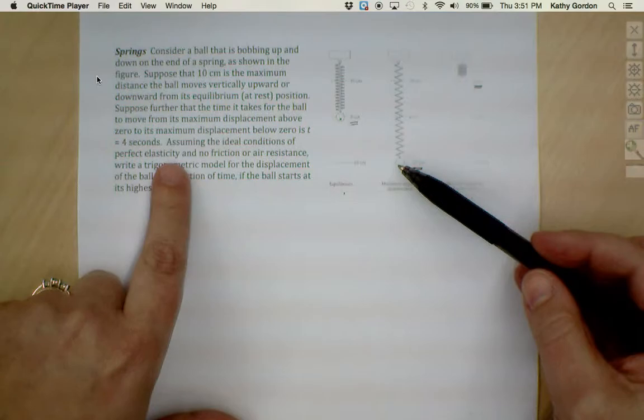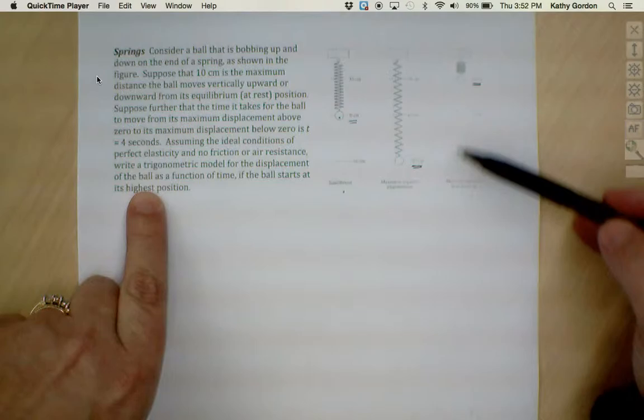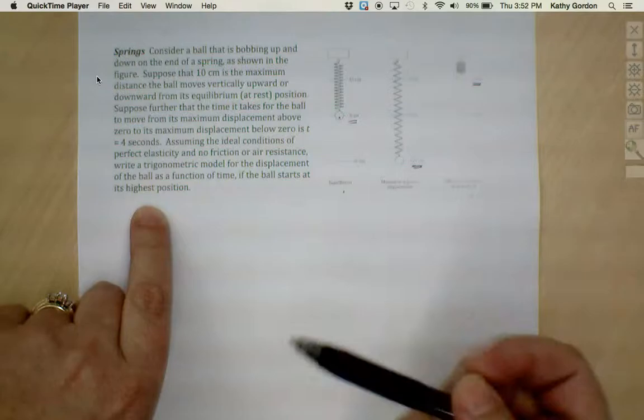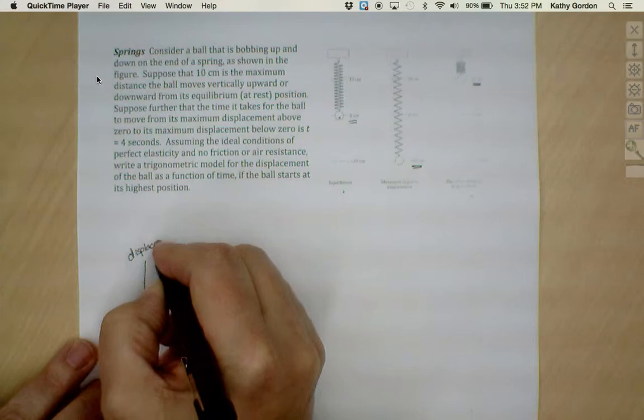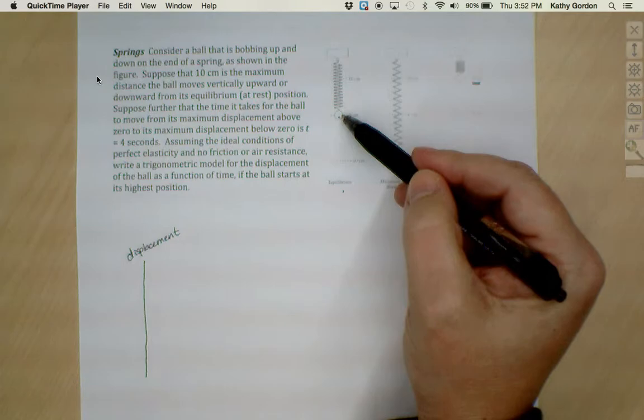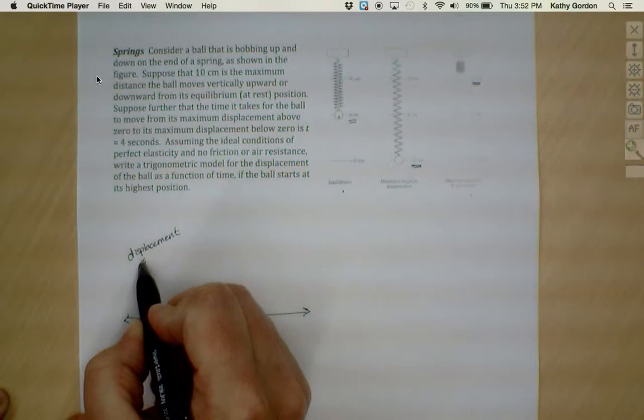It says to suppose further that the time it takes for the ball to move from its maximum displacement above zero, to its maximum displacement below zero, down to here, is t equals four seconds. So it takes four seconds for it to bounce from here, down to here, back again, to get from its max to its min. Assuming the ideal conditions of perfect elasticity and no friction or air resistance, write a trigonometric model for the displacement position, up and down, of the ball as a function of time if the ball starts at its highest position.